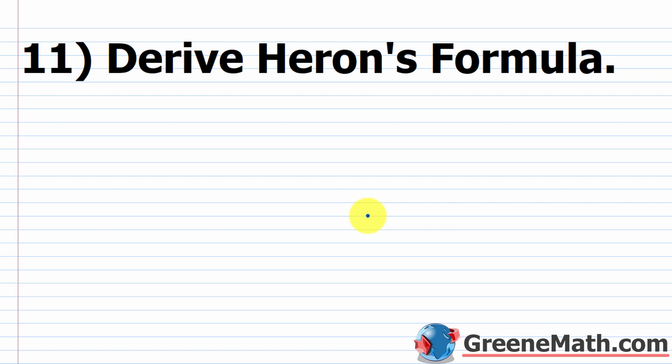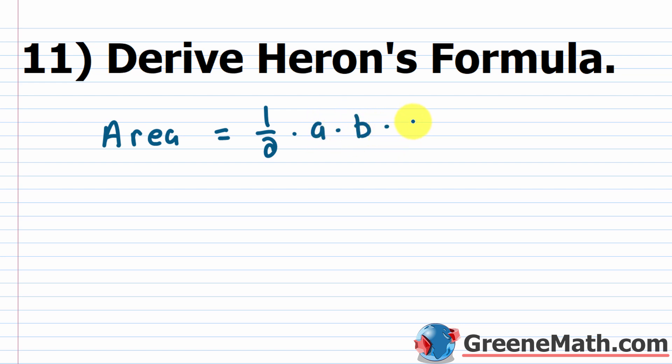We're asked to derive Heron's formula. We'll start with the area formula. We saw this formula earlier in the practice test and also for the law of sines. If you have the length of side A and the length of side B, and also the measure of the included angle C, then the area is one half times the length of side A times the length of side B times the sine of the included angle C.